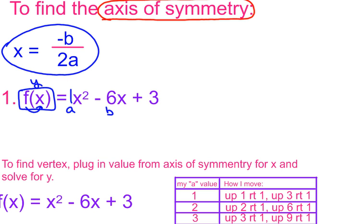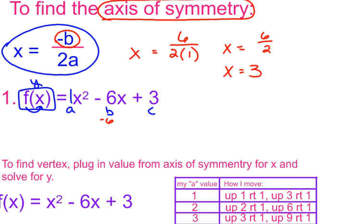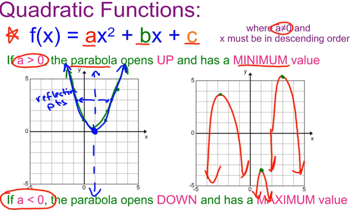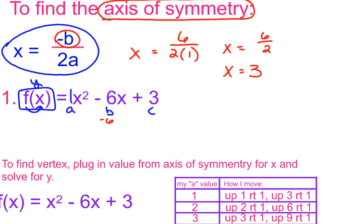Reducing that fraction gives me x = 6/2, so x = 3. That's telling me x equals 3 is the line that cuts my parabola in half. The axis of symmetry is always the x-coordinate of your vertex. So in this problem, my vertex is at x = 3 and some y-value, which is going to be helpful.